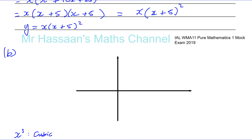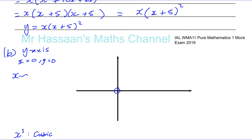We've got to find out where it crosses the axes. It crosses the y-axis when x equals zero. If we put x equals zero in, we get y equals zero - so it crosses the y-axis at the origin. It crosses the x-axis when y is zero. When y is zero, you have x times (x + 5)² equals zero.